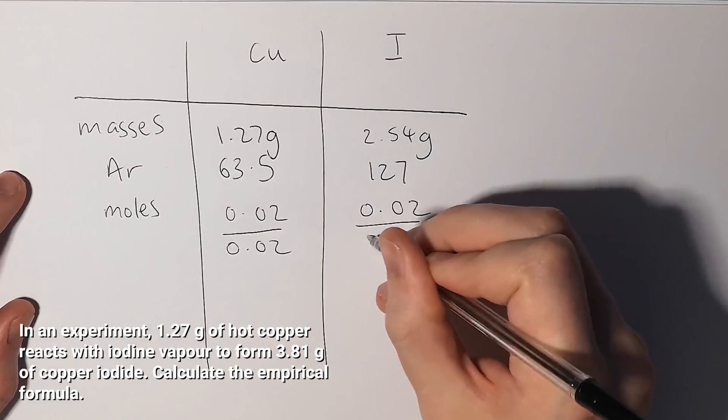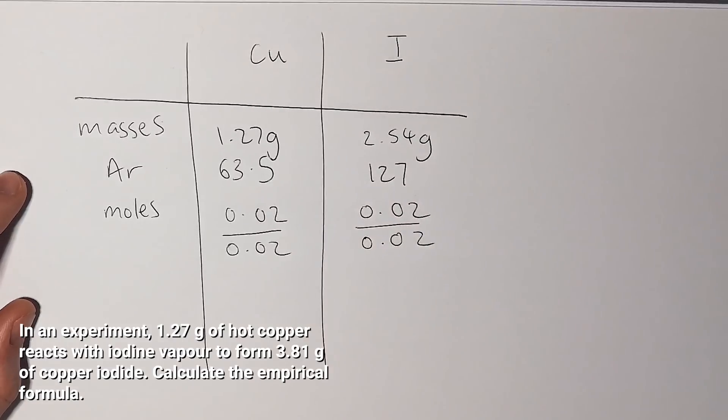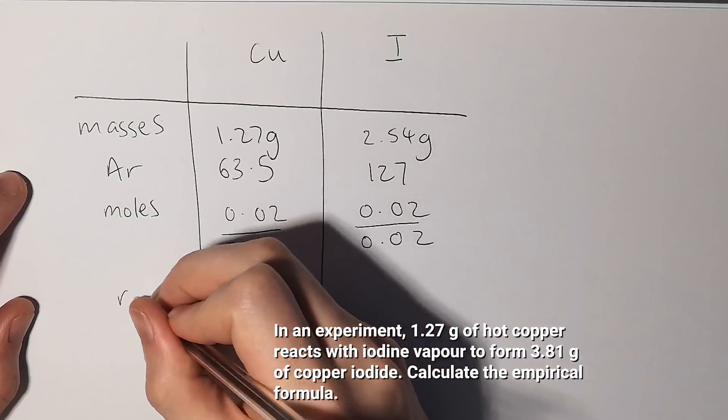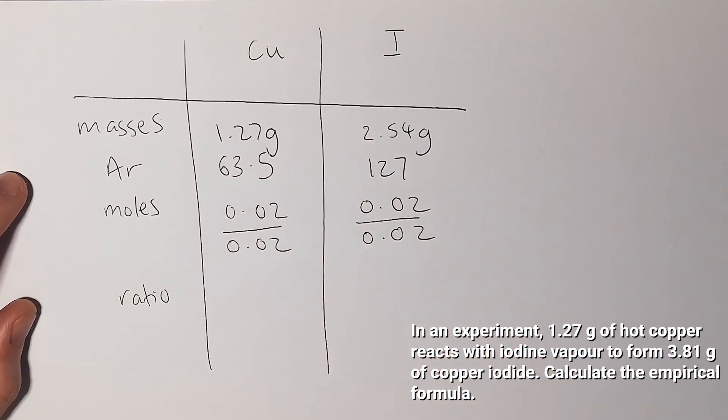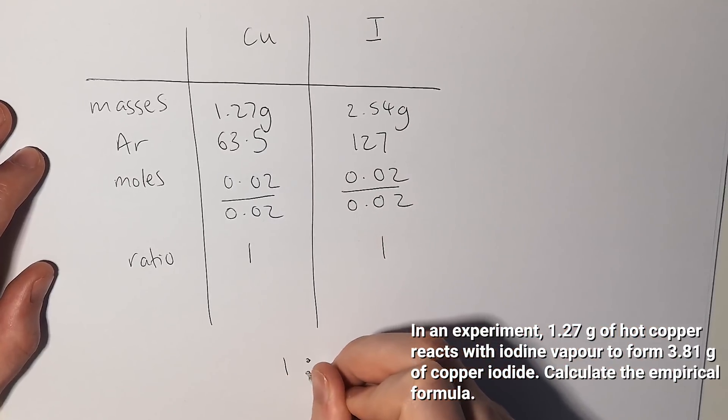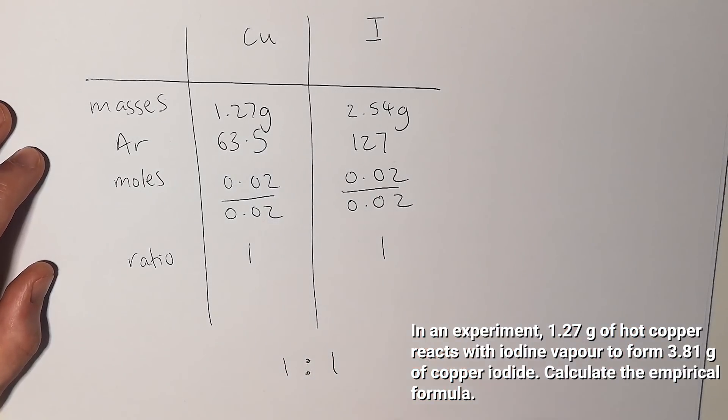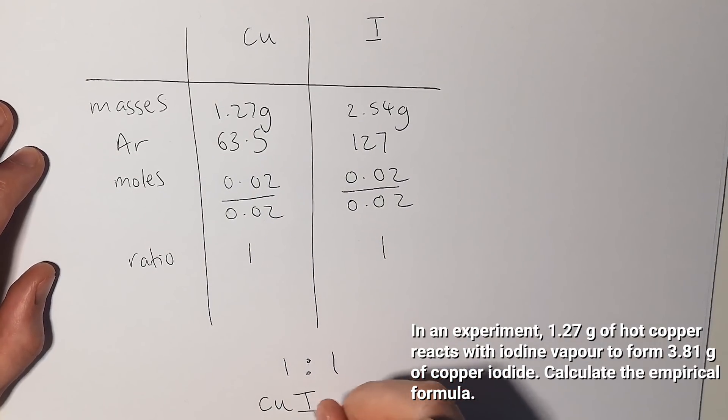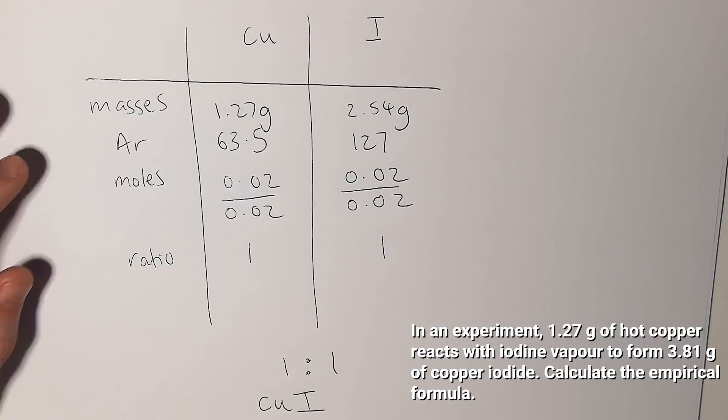As they are both the same we divide them both by 0.02 and that gives us a ratio of 1 to 1. That means that when I write the empirical formula for copper iodide, it's going to be one copper atom for every iodine atom. So the empirical formula for copper iodide is CuI.